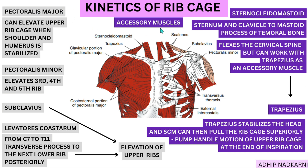Moving on to pectoralis minor, which is attached to the third, fourth, and fifth ribs — because of its attachment it will elevate those ribs, again helping with the pump handle movement and inspiration in the upper ribcage. Then subclavius, present just below the clavicle, also creates elevation of the rib and helps in inspiration. Levator costarum is present posteriorly, attaching from C7 to T12 at the transverse processes and going toward the ribs one level lower. These posterior muscles also help in elevation of those upper ribs.